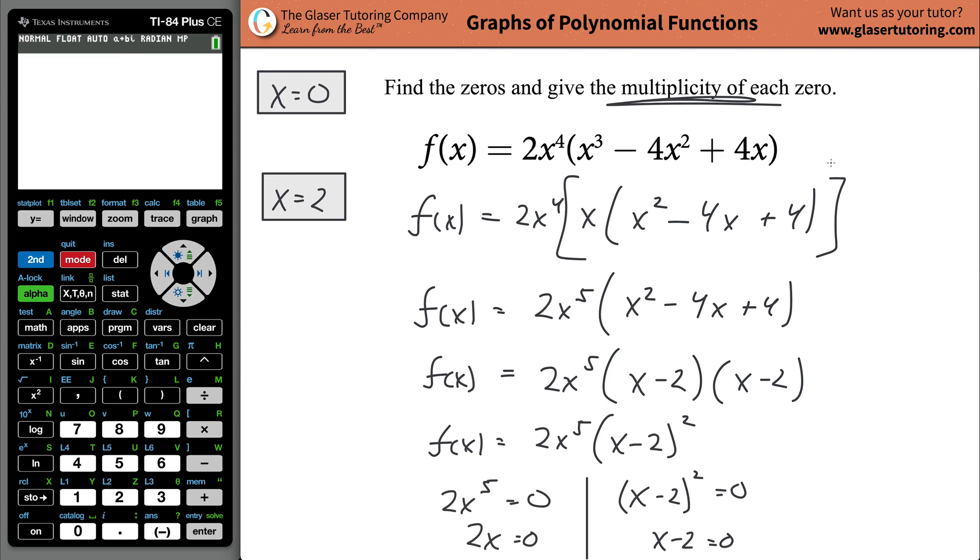Now, to find the multiplicity of each zero, all you got to do is when you have it in this form, just look at the exponents. So when you found the zero value of the function, x will be zero. The power of that factor was five. And therefore, that's also equal to its multiplicity. So that's why I put it in that form. And also, when you have, remember when we solve for the other zero of the function, where x is going to be equal to two, the power of that was a two. So that's going to be the multiplicity there. And that's how you would answer the zeros and the multiplicities.